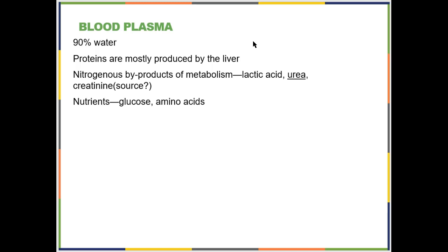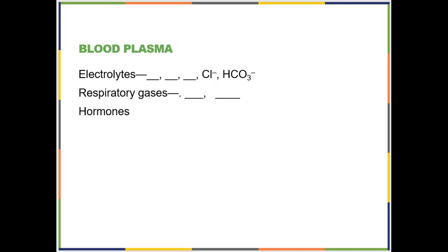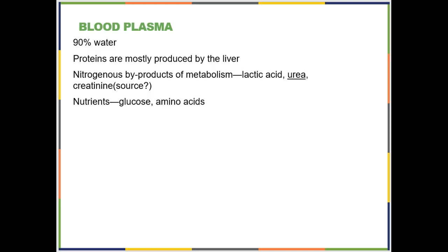Then plasma — you basically want to know what's in plasma. The one thing I will expand on is urea, which is one of your body's major nitrogenous byproducts, meaning it contains nitrogen.